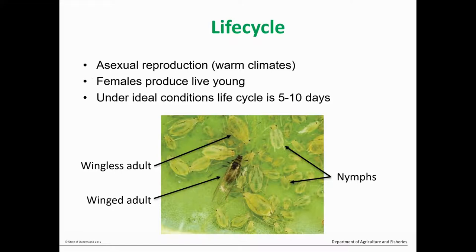In Australia, aphids mainly reproduce asexually, which means the offspring they produce are genetically identical to the parent. They produce live young and the life cycle is very short — as little as five to ten days under ideal conditions. This means that populations can build up very quickly, and also that they can quickly develop insecticide resistance.